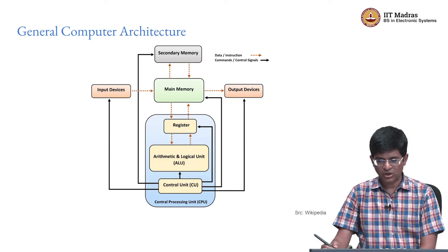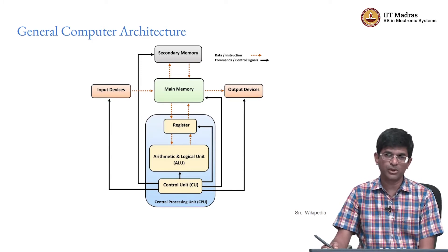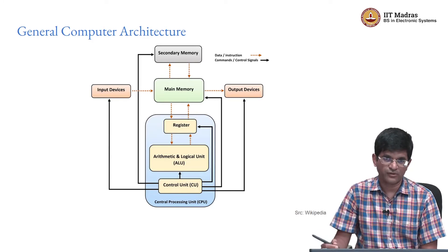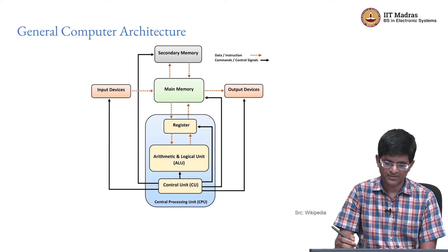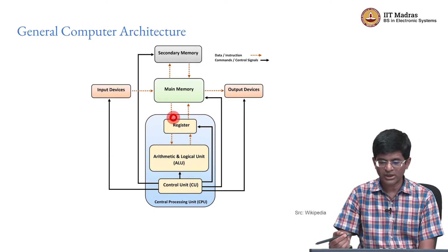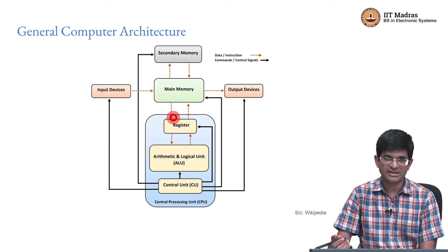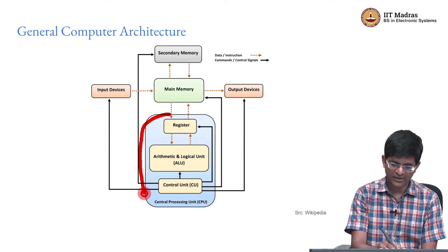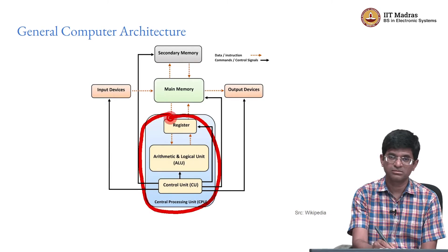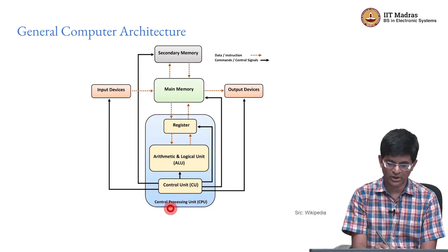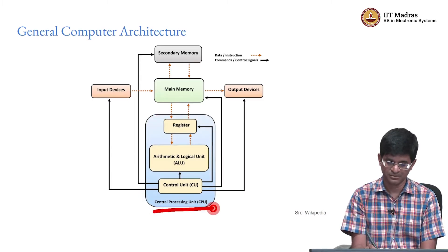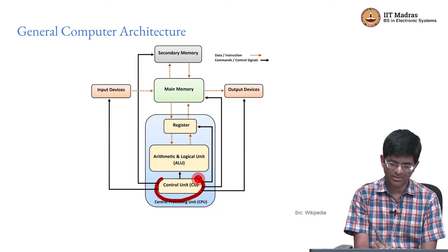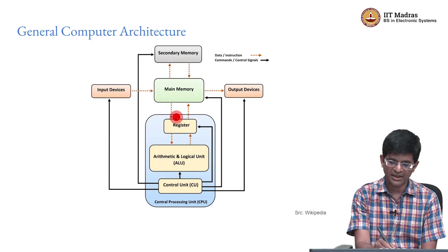This is a picture of a general purpose computer — the architecture of a general purpose computer. We have already looked at this in the context of how a C program runs. We know that we can think of a processor as having certain core functionality which we usually call the central processing unit, within which there are some amount of control, an arithmetic and logic unit, and a set of registers.